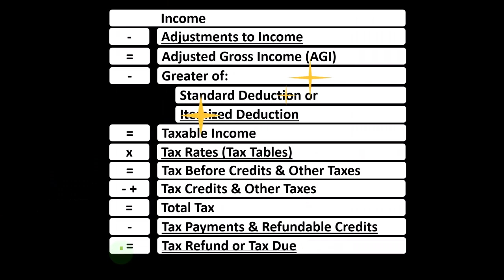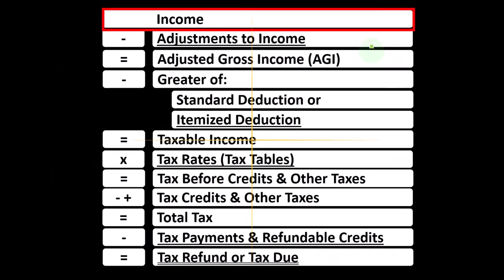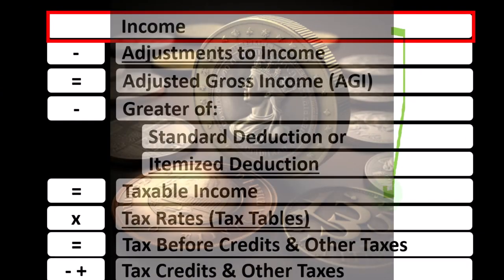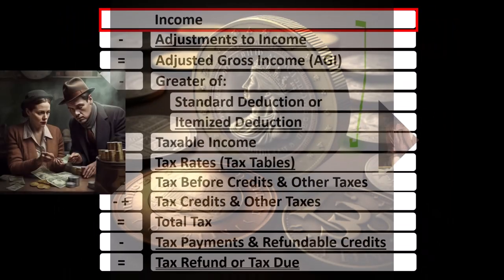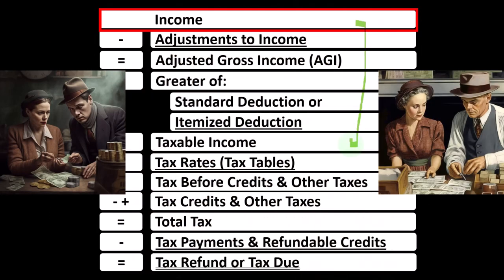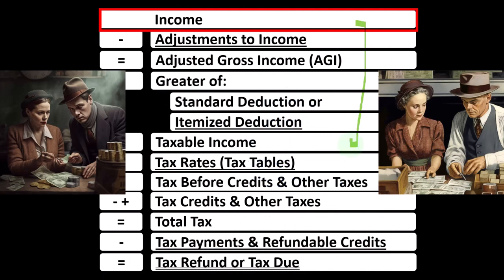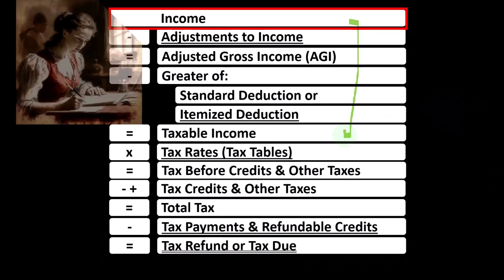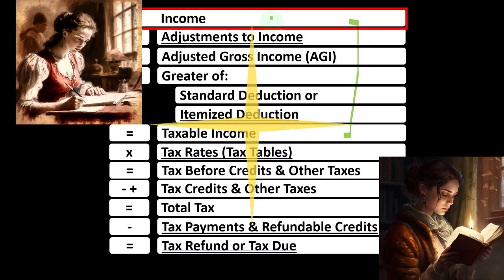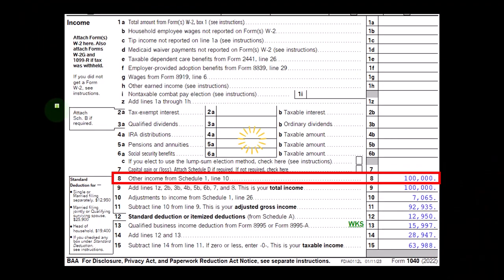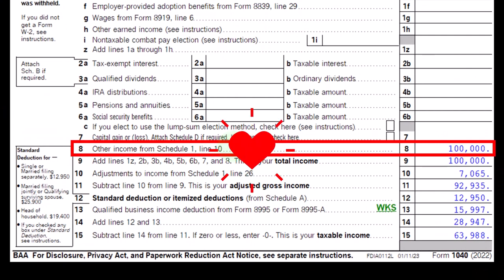Looking at the income tax formula, we're focused on line one income. Remember, the first half of the income tax formula is in essence an income statement — just an outline with other forms and schedules flowing into these line items. One of those is the Schedule C, having business income minus business expenses, giving us the business net income rolling into line one income of the income tax formula.